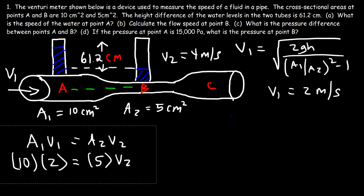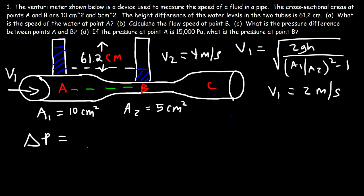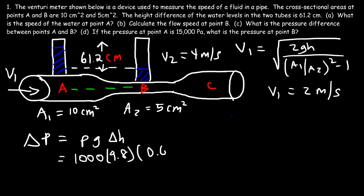Now let's move on to part C: what is the pressure difference between points A and B? As mentioned before, the pressure difference is proportional to the height difference between the two water columns: delta P = ρgh. The density is 1000, g is 9.8, and the height difference is 0.612 meters. Multiplying these three numbers gives a pressure difference of 5,997.6 pascals.